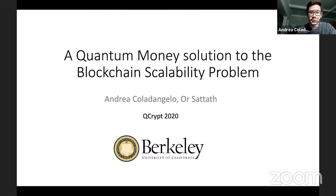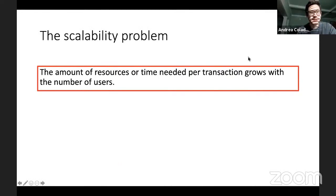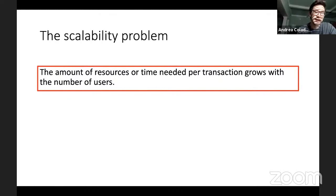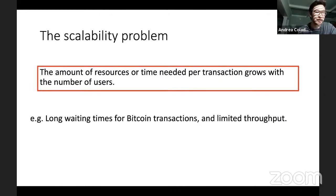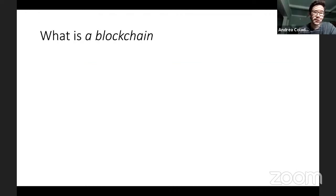What is this problem? In a nutshell, most blockchain designs suffer from the following loosely defined problem: the amount of resources or time required per transaction grows badly with the number of users involved. Solving this problem means keeping the amount of resources and time used per transaction approximately constant. An example of this problem is the long waiting times for transaction confirmations on the Bitcoin blockchain and the limited throughput of transactions — a limited number of transactions the system can handle per second.